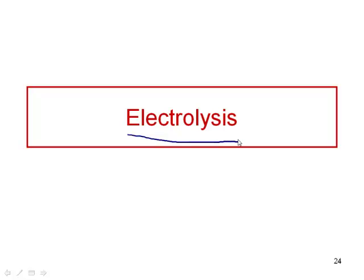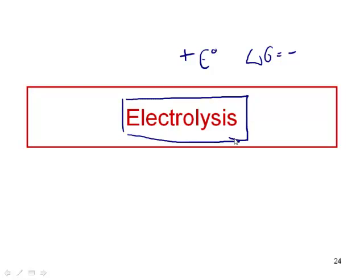What electrolysis is, in contrast to what we've talked about earlier this week, it is a non-spontaneous redox reaction. Earlier this week we've talked about galvanic cells and how the redox reactions that happen in a galvanic cell are spontaneous — they happen by themselves. They have a positive potential and a value of delta G which is negative. Well, electrolytic cells and electrolysis reactions are the reverse. These are ones that are non-spontaneous.